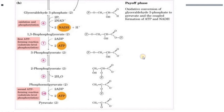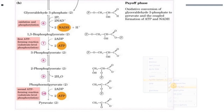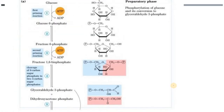In the previous video we discussed glycolysis, where glucose is metabolized to pyruvate. This is carried out in two phases: the preparatory phase and the payoff phase. In the preparatory phase, glucose has been cleaved into two different molecules — glyceraldehyde-3-phosphate and dihydroxyacetone phosphate.